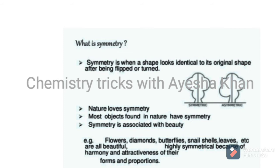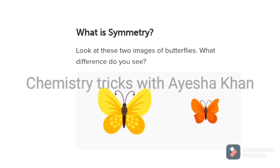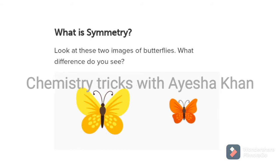To understand symmetry, let's take the example of two butterflies. One butterfly is symmetrical and the other is asymmetrical. Look at butterfly A — its two wings are joined to the center portion of the butterfly. The wings on both sides have the same shape and same size. If we cut them and overlap them, they would perfectly overlap each other. This means this butterfly is showing symmetry.